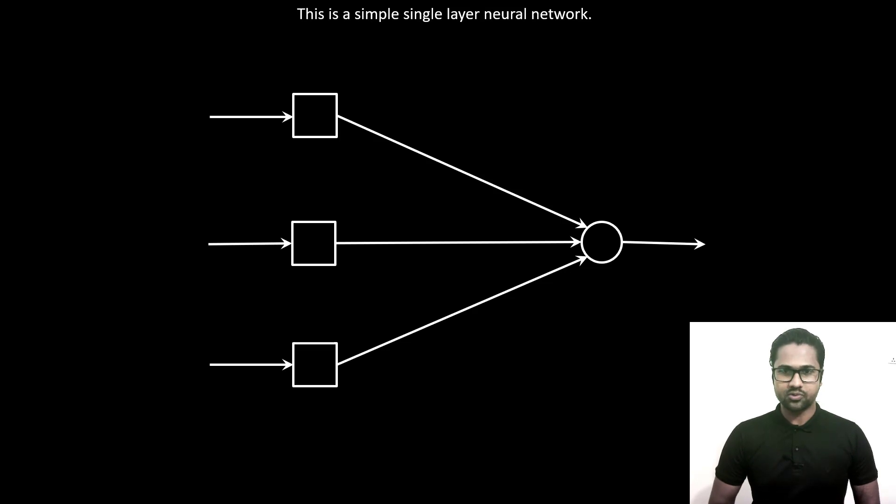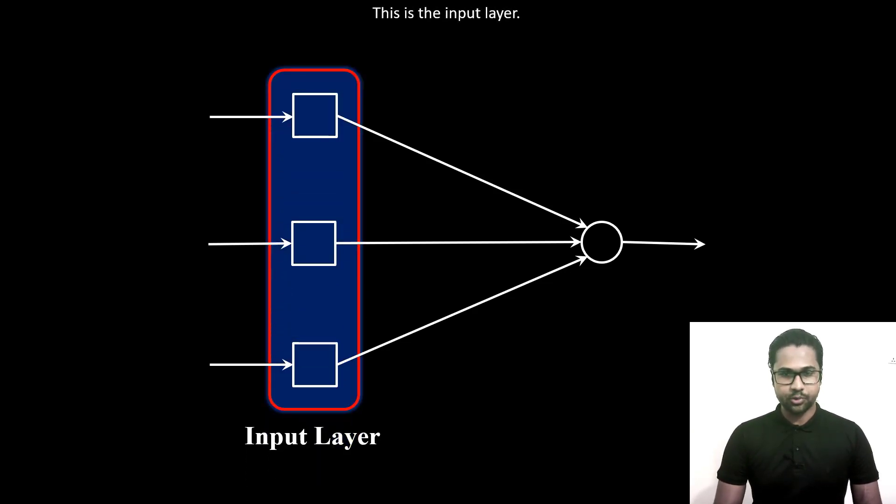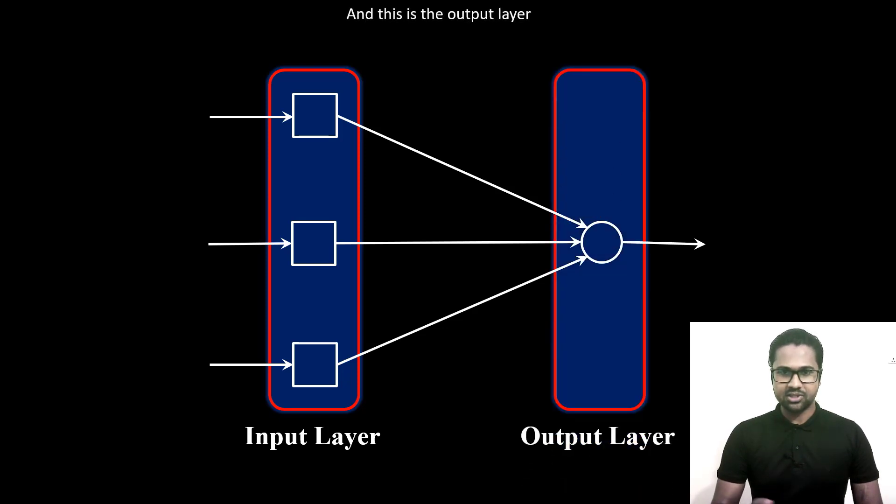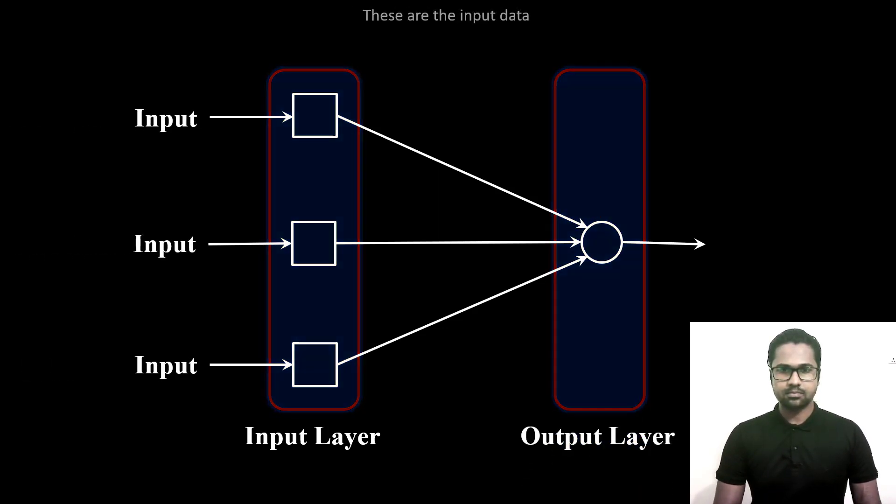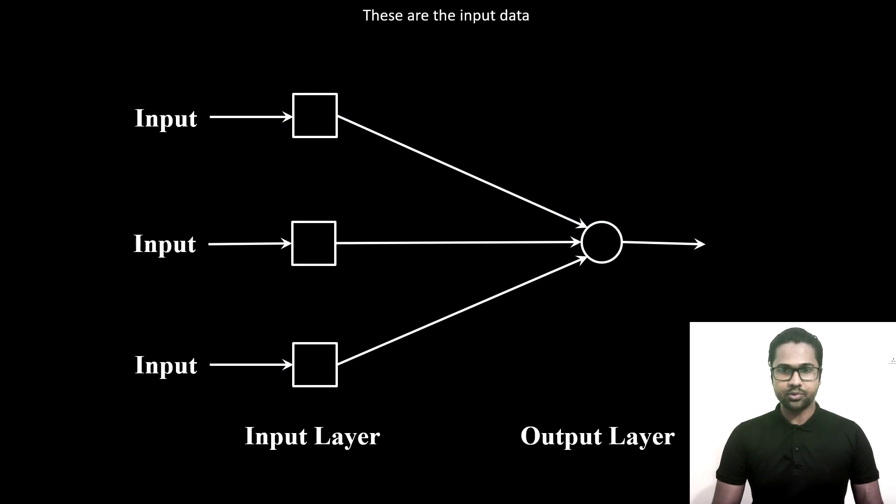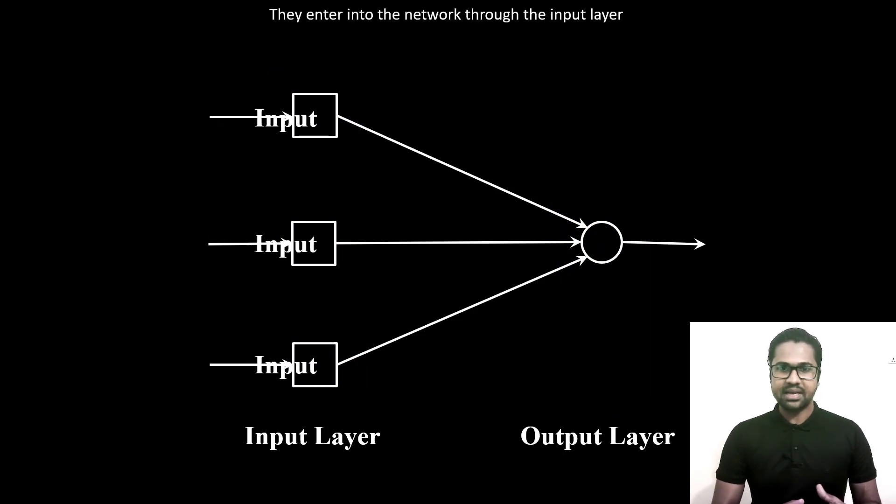This is a simple single-layer neural network. This is the input layer and this is the output layer. These are the input data. They enter into the network through the input layer.